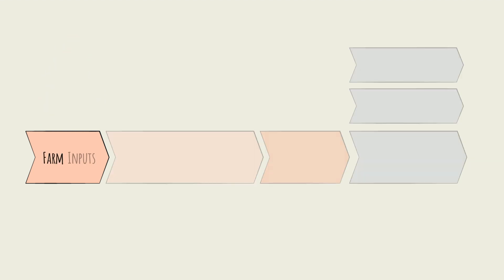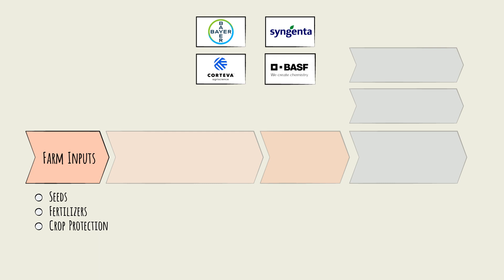First, the farm inputs, which include seeds, fertilizers, and crop protection products like pesticides. This sector is led by players like Bayer, which acquired Monsanto, Syngenta, Cortiva, BASF, Yara, and Nutrien, among others.